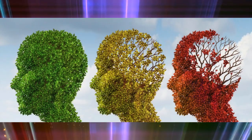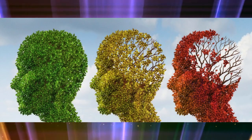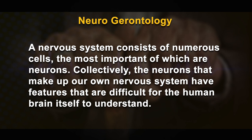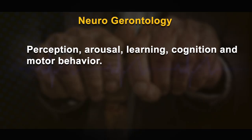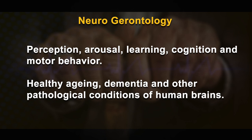Neurogerontology is a hybrid of neuroscience and gerontology — two rapidly growing and diverse fields with multifaceted basic scientific and clinical dimensions. It tells the story of how the aging brain affects all aspects of cognition and physical performance. The nervous system consists of numerous cells, the most important of which are neurons. Neurogerontology deals with the nervous system and aging aspects of physical performance of the brain, linking the principles of neuroscience with gerontology and psychology. It explores functional relationships between the central nervous system and psychological phenomena of aging, including perception, arousal, learning, cognition, and motor behavior. It also studies healthy aging, dementia, and other pathological risk conditions of the human brain.